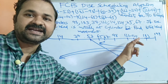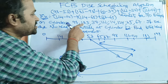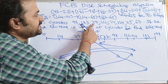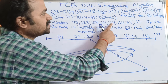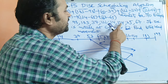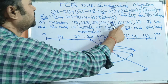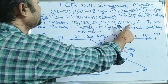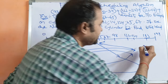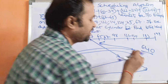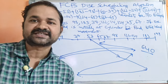To summarize: the read-write head starts at 53. The calculations are: 98−53, plus 183−98, plus 183−37, plus 122−37, plus 122−14, plus 124−14, plus 124−65, plus 67−65. Adding all these values gives a total head movement of 640 cylinders. This completes the FCFS Disk Scheduling Algorithm example.